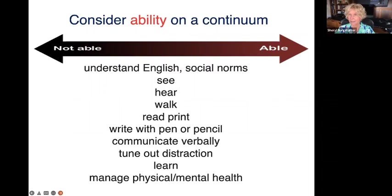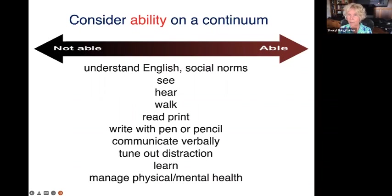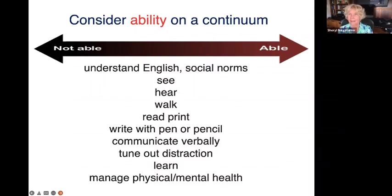It's actually easier to think about ability, and I think it's more relevant. Not everyone has a disability, but everybody does have an ability level in a certain area. I have a double-edged arrow from 'not able' to 'able' on the right, and everybody in this group could rate themselves on the ability to understand English. Someone might rate themselves kind of low if they're not from this country or English is a second language, or it could be someone who has a reading-related learning disability.